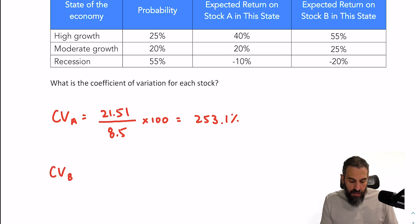Coefficient variation B, I'll take the standard deviation of 32.27 over the expected return of 7.8 times 100, and that is 416.4%. So you can see that stock B is a lot more risky than stock A is relative to their respective returns.